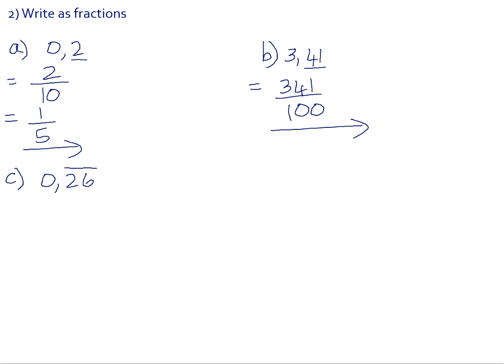Now when we come to 0.26 recurring, we have a problem, because 0.26 recurring means 0.262626 carrying on forever. Our challenge is how many zeros do we put on the end of our 1 in our fraction? We can't, because it would be infinitely many zeros. So we need a different method for rewriting this recurring decimal as a fraction. I suggest that once I've done this example, you pause the video and make a note of the procedure, because this is the process you'll need every time.